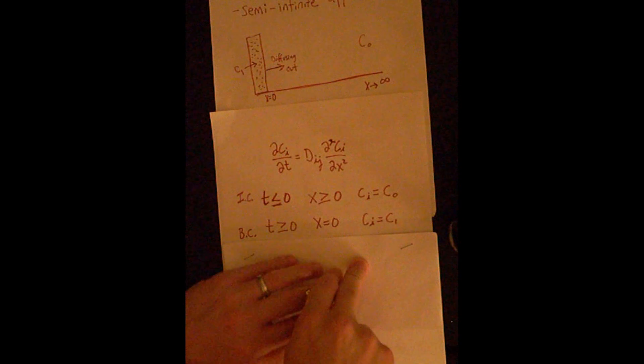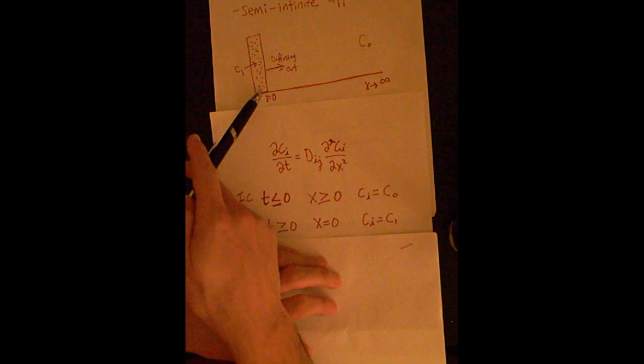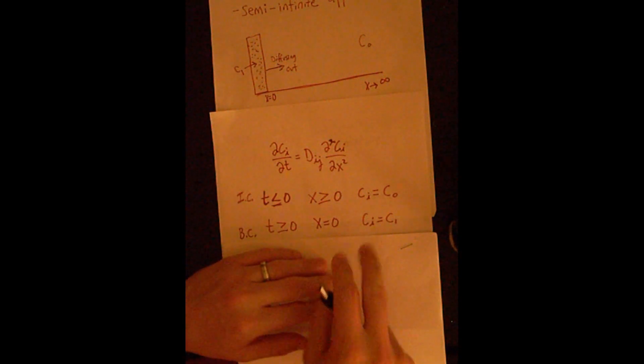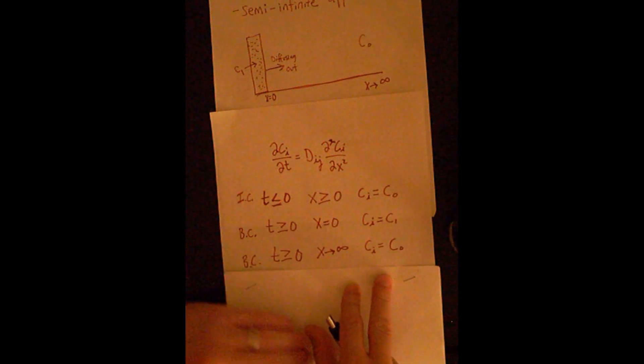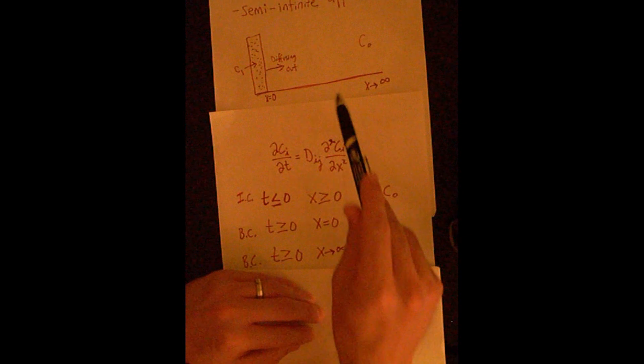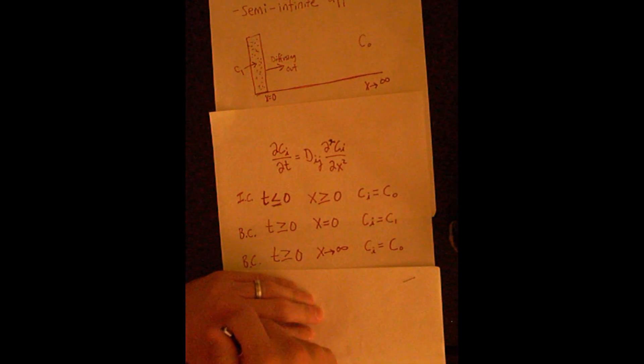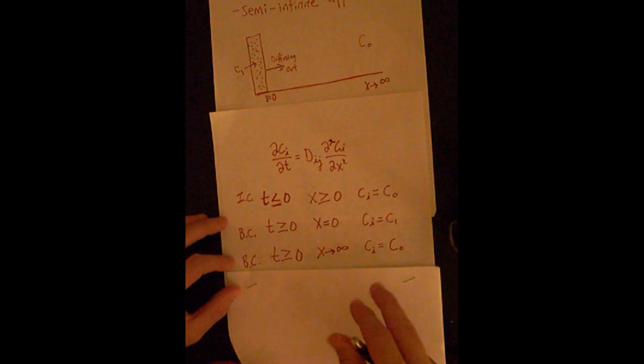One of the boundary conditions at time greater than or equal to zero is again at this interface right here. The concentration always at this point is going to be equal to C1. The other boundary condition is going to be out here at x approaches infinity. And like I said before, the concentration at this point always has to be equal to C0, the original concentration. So these are our governing equation and the boundary conditions.